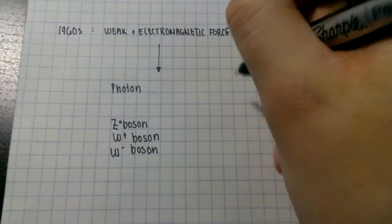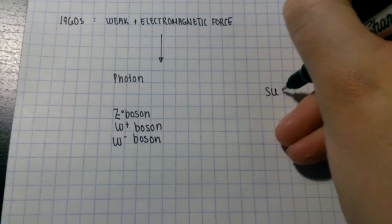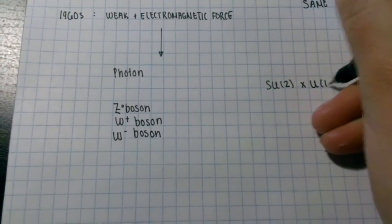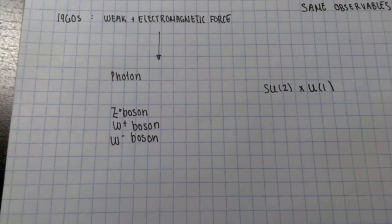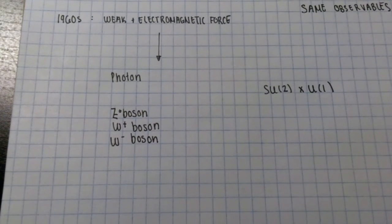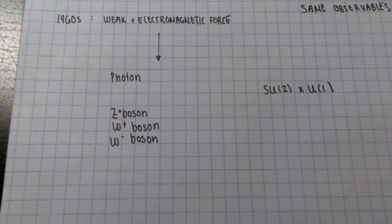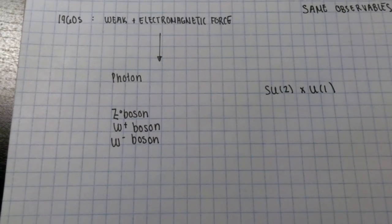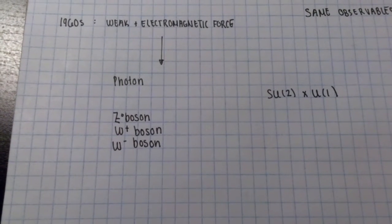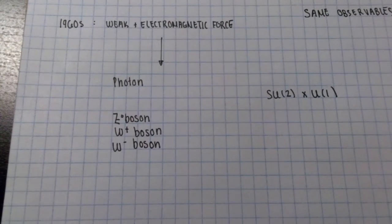The theory of Glashow, Salam and Weinberg is often said to exhibit an SU2 times U1 symmetry. The SU2 and U1 refer to some specific operations, transformations, or manipulations that you are allowed to make on your physical system, like the transformations done on gauge invariant systems.